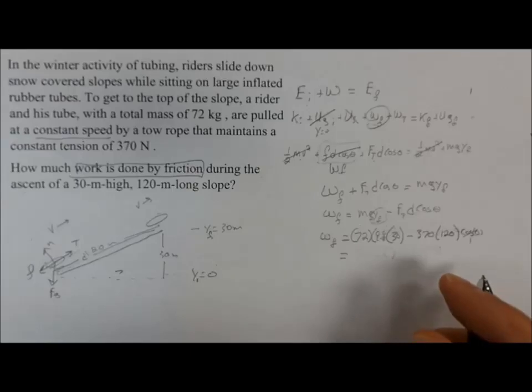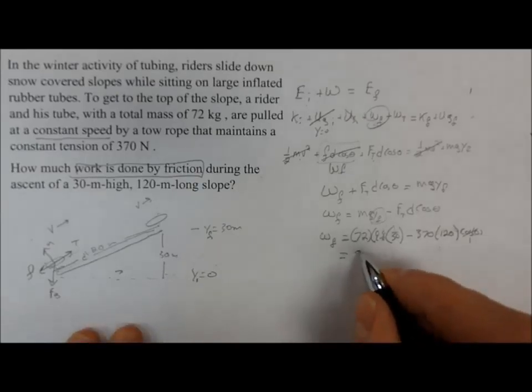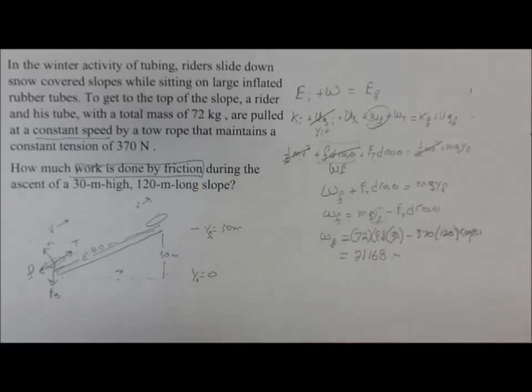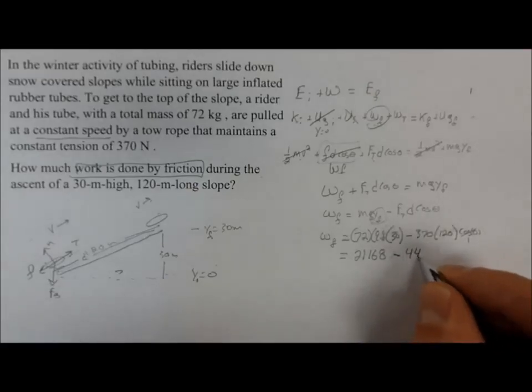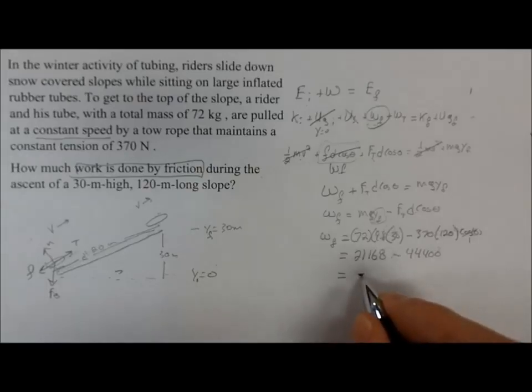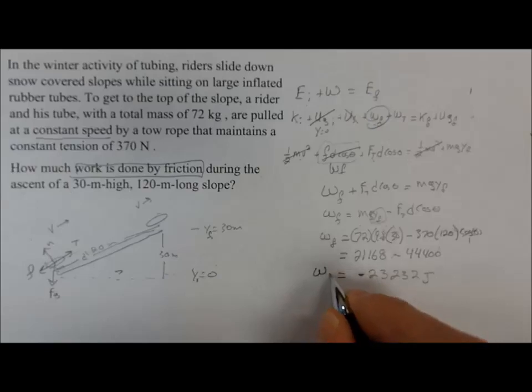We get an error because I typed something in wrong. 72 times 9.8 times 30, 21,168 minus 370 times 120 times 1 is 44,400. So, subtract those, and we get a negative 23,232 joules of work done by friction.